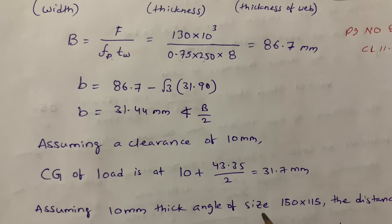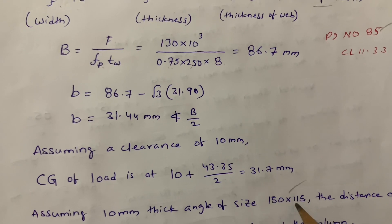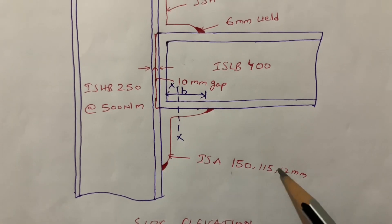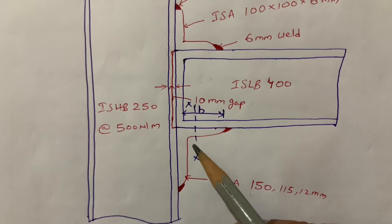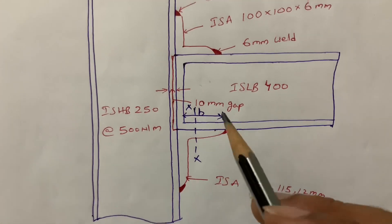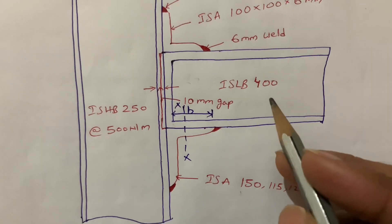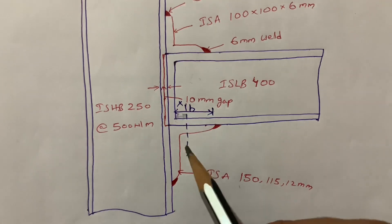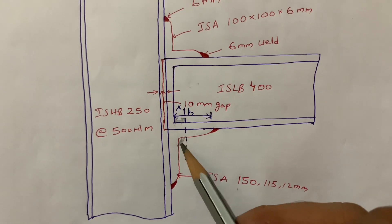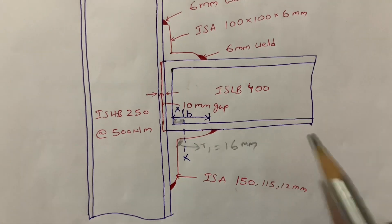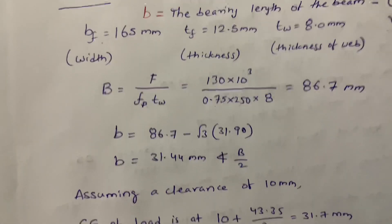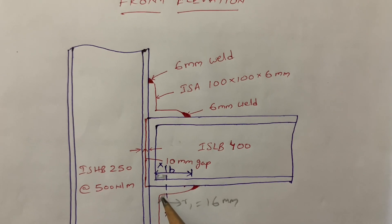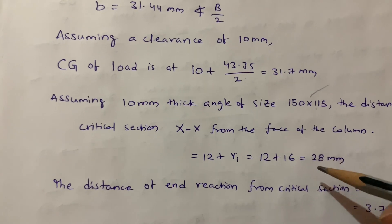I am assuming a 10 mm thick angle of size 150 by 115 mm. The critical section is taken at the face of the column. We know the small b value and we calculate the critical section XX from the face of the column. The distance is: flange thickness 12 mm plus R1 (radius of root = 16 mm, from steel tables). So 12 plus 16 equals 28 mm.